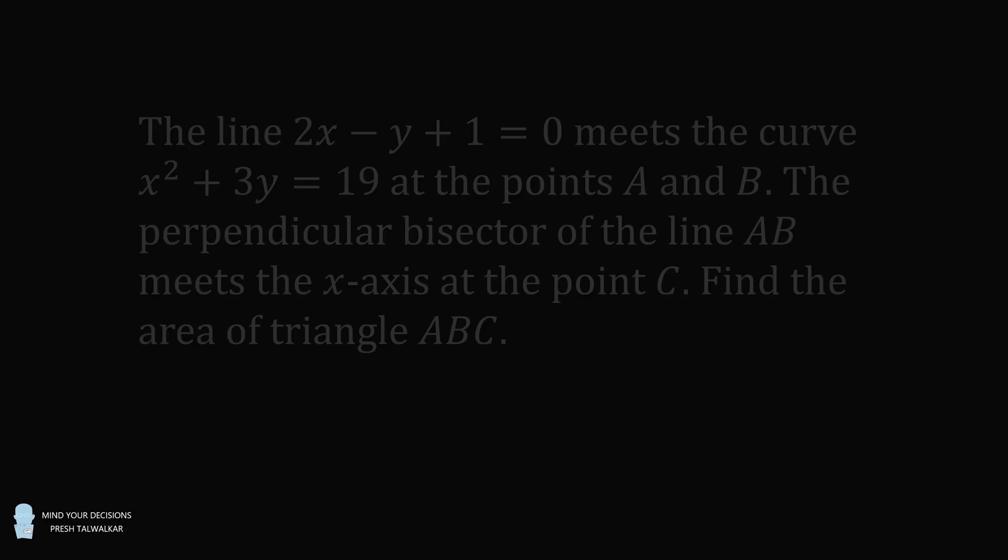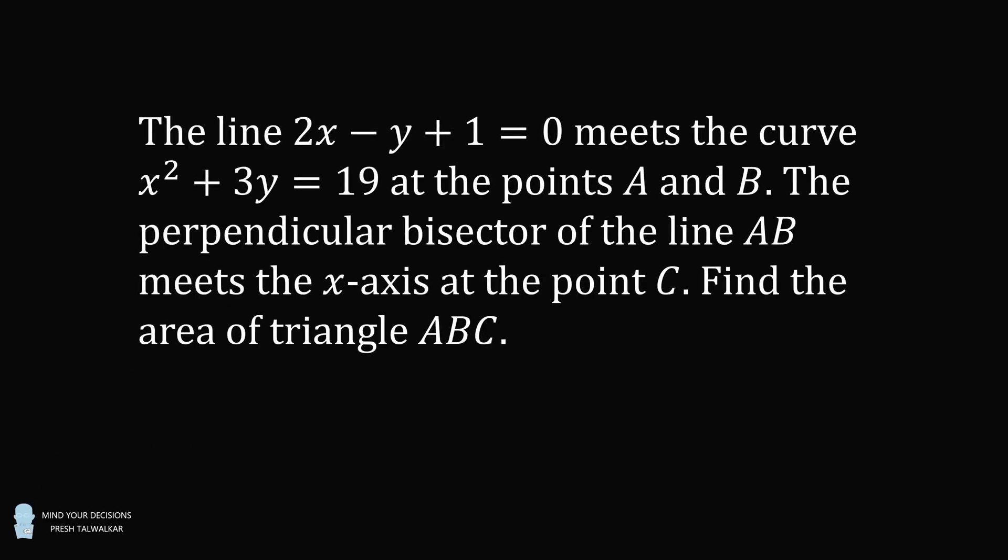This is Presh Talwalkar. The line 2x minus y plus 1 equals 0 meets the curve x squared plus 3y equals 19 at the points A and B. The perpendicular bisector of the line AB meets the x-axis at the point C. Find the area of triangle ABC.